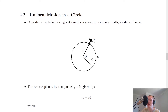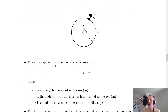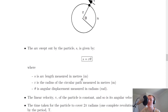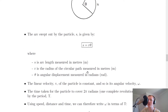Now that we have these three things labelled, we can relate them together using an equation. The arc swept out by the particle s is given by s equals r times theta. So the arc length s equals the radius r of the circular path multiplied by the angular displacement theta, where s is arc length in meters, r is the radius in meters, and theta is angular displacement in radians.